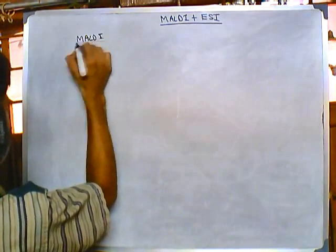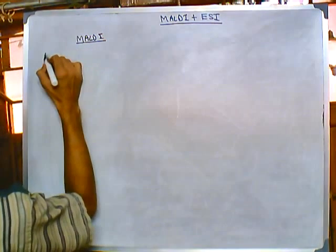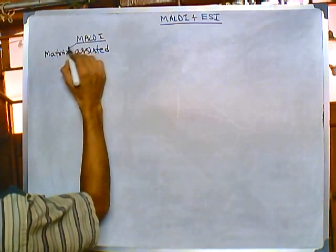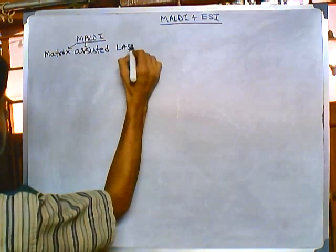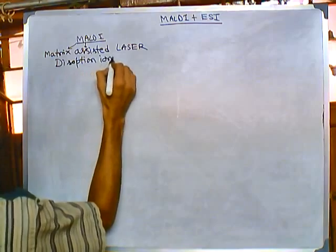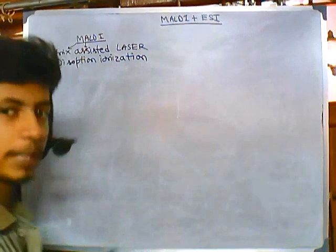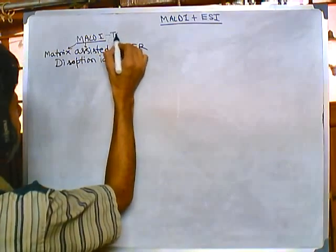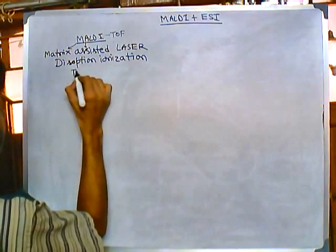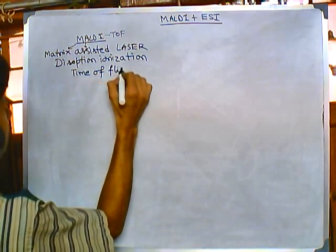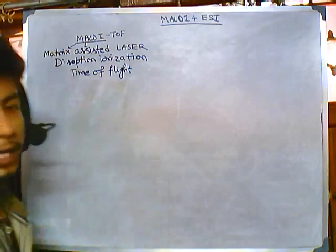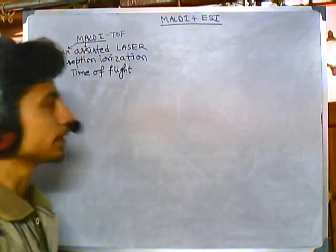Let us first talk about MALDI. The full name of MALDI is Matrix Assisted Laser Desorption Ionization — M for matrix, A for assisted, L for laser, D for desorption, I for ionization. Sometimes TOF is attached to it, making it MALDI-TOF, where TOF means time of flight. So it's called Matrix Assisted Laser Desorption Ionization Time of Flight — MALDI-TOF. It's a mouthful of a name, but the process is extremely simple.